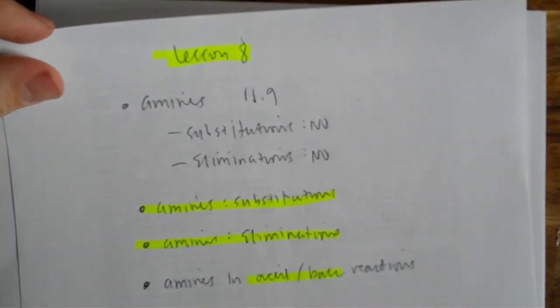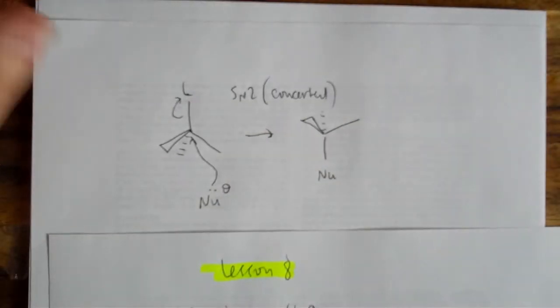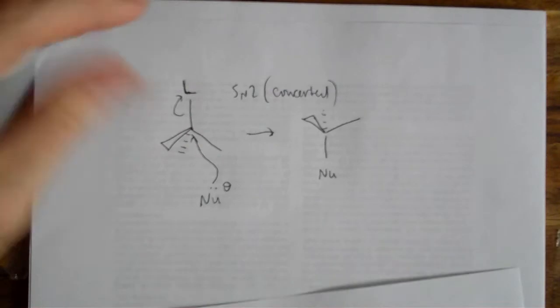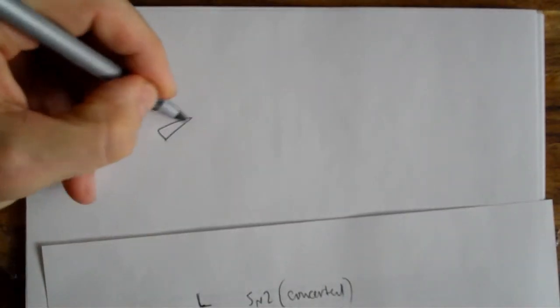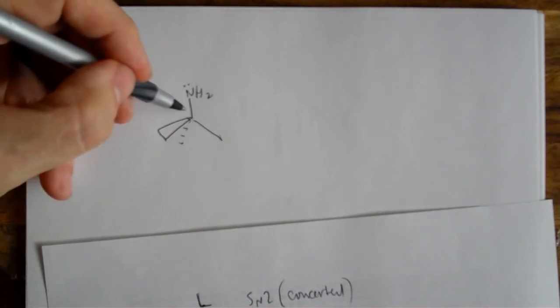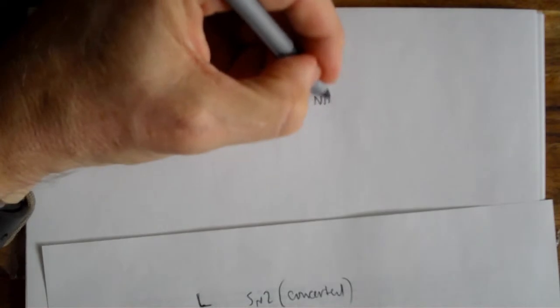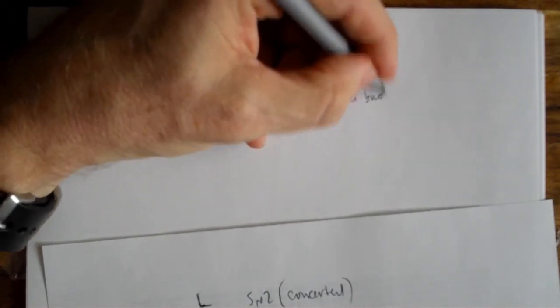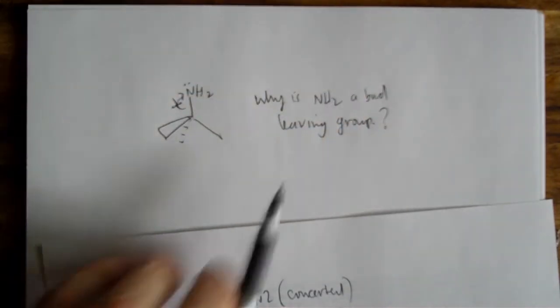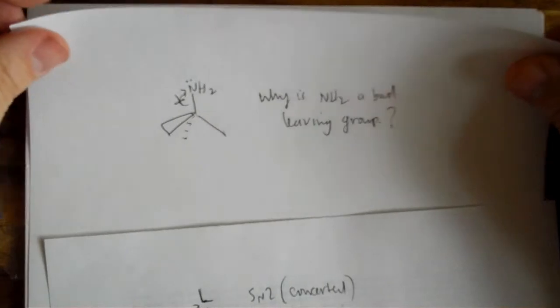Okay so she starts out in 11.9 saying that they don't undergo substitutions and don't undergo eliminations. So really to be more precise what she means is that, and she spends some time talking about it and that needs to be obvious to you. Why is NH2 a bad leaving group? She spends some time talking about it and that needs to be obvious to you. I'm not suggesting it ought to be obvious at this moment, but it needs to be obvious soon. Why is NH2 a bad leaving group?